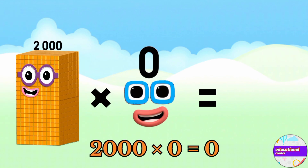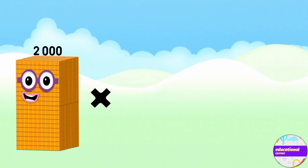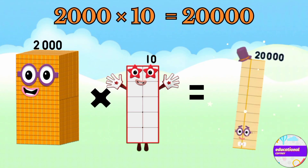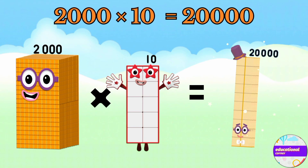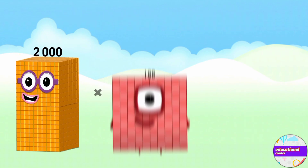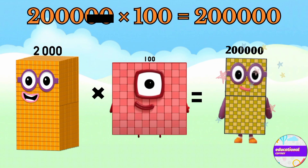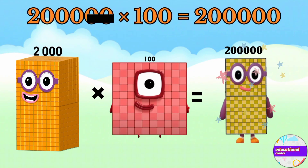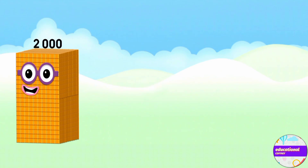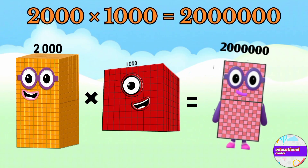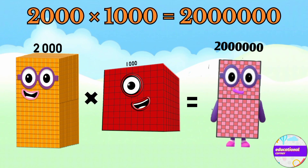Two thousand multiply by zero equals zero. Two thousand multiply by ten equals twenty thousand. Two thousand multiply by hundred equals two hundred thousand. Two thousand multiply by thousand equals two million.